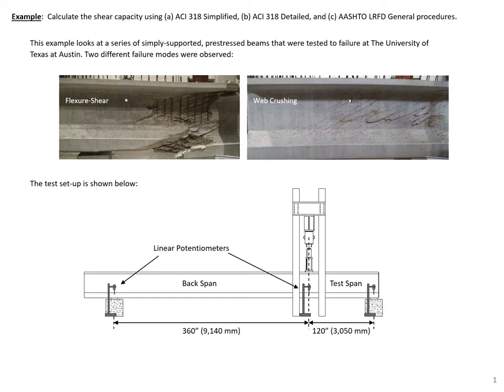In this example problem, we're going to calculate the shear capacity of a given section using the ACI 318 simplified method, the ACI 318 detailed procedure for pre-stressed concrete, and the AASHTO LRFD general procedure.